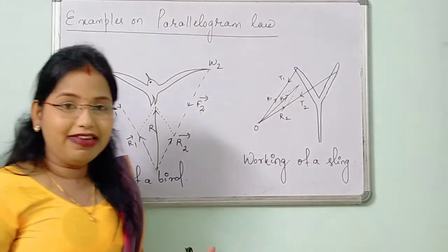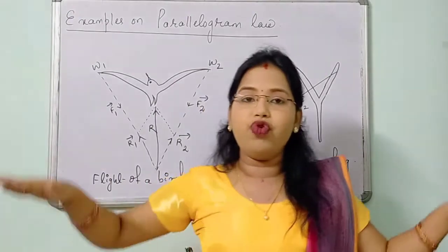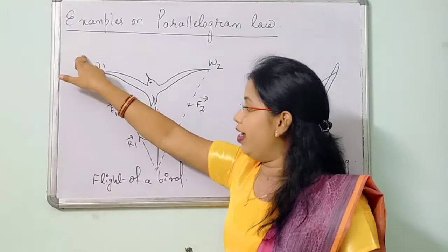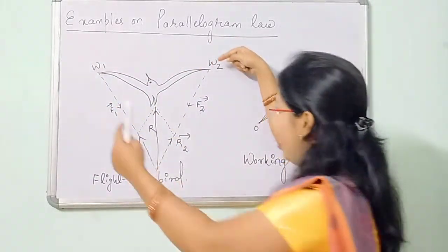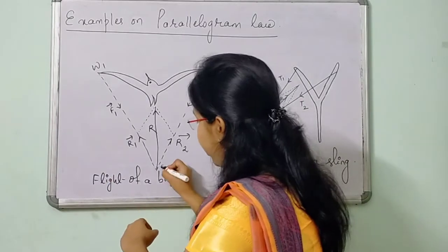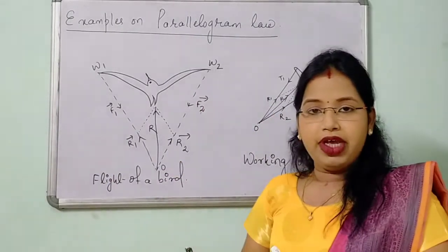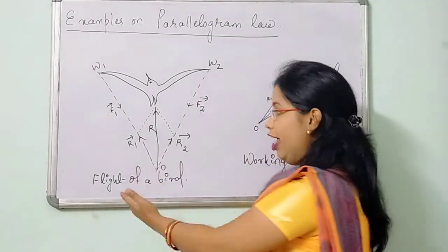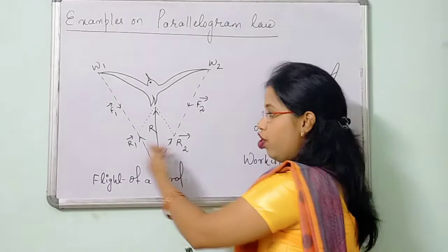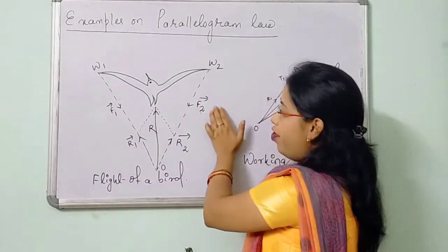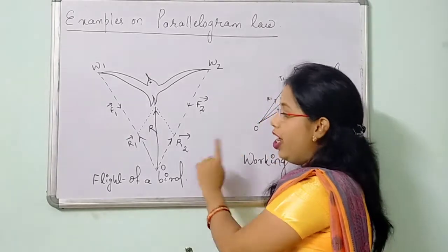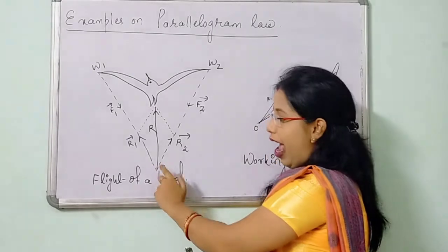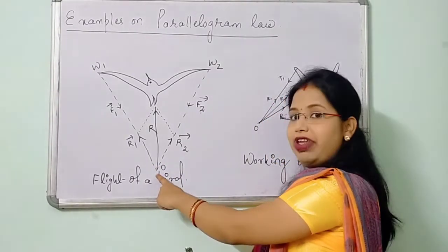When a bird flies, it pushes the air with forces F1 and F2 in a backward direction with its wings W1 and W2. The line of action of these two forces meet at point O. In accordance with Newton's third law of motion, air exerts equal and opposite reactions — for F1 there is a reaction R1, and for F2 there is a reaction R2. Here both R1 vector and R2 vector are acting at the same point.